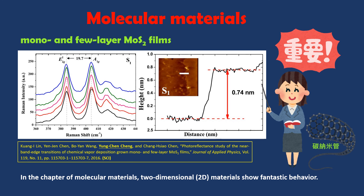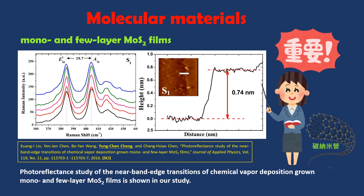In the chapter of Molecular Materials, two-dimensional (2D) materials show fantastic behavior. Photoreflectance study of the near-band-edge transitions of chemical vapor deposition-grown mono- and few-layer MoS2 films is shown in our study.